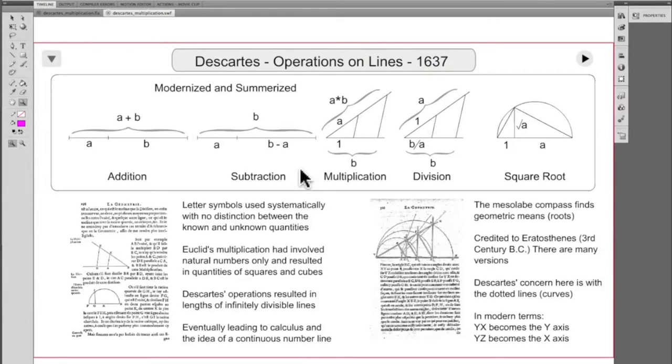Descartes demonstrated his method for combining geometry and algebra in 1637 as an appendix to his discourse. The introduction to that discourse is probably more important than the geometry and certainly a lot easier to read.